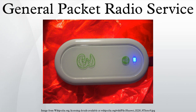A GPRS connection is established by reference to its access point name. The APN defines the services such as Wireless Application Protocol access, Short Message Service, Multimedia Messaging Service, and Internet communication services such as email and World Wide Web access. In order to set up a GPRS connection for a wireless modem, a user must specify an APN, optionally a user name and password, and very rarely an IP address — all provided by the network operator.